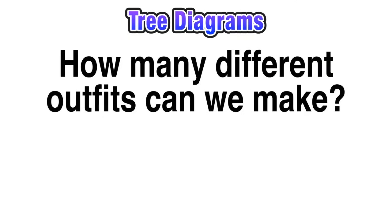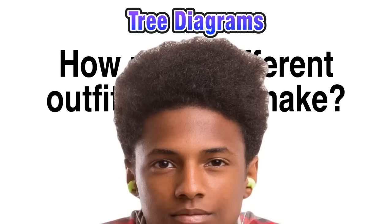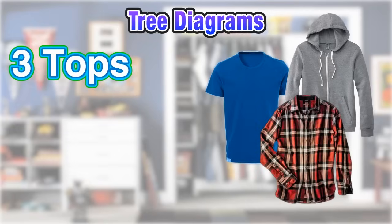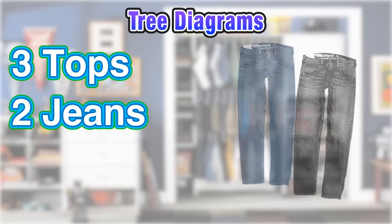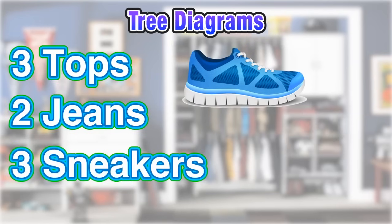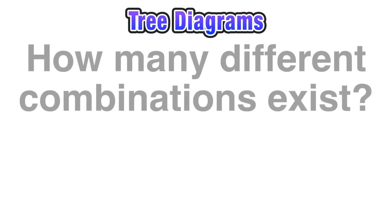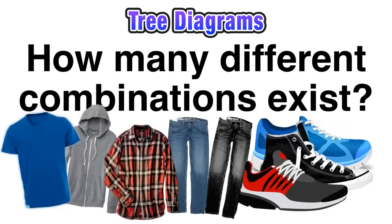So now we're ready to extend our understanding of tree diagrams to a more complex example where we're going to help Josh figure out how many different outfits he can make with what he has in his wardrobe. We're looking to find the total number of different combinations of outfits from the following choices: three tops — a blue t-shirt, a gray hoodie, and a red plaid dress shirt; two pairs of jeans — blue jeans and black jeans; and three pairs of sneakers — running shoes, casual shoes, and high tops.